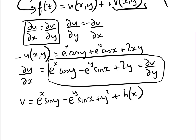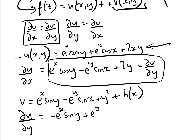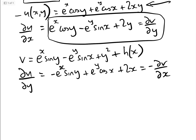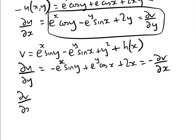Now we use the second Cauchy-Riemann equation. We look at du/dy: du/dy is minus e to the x sin y plus e to the y cos x plus 2x. From the second Cauchy-Riemann equation, that equals minus dv/dx, so therefore dv/dx equals e to the x sin y minus e to the y cos x minus 2x.